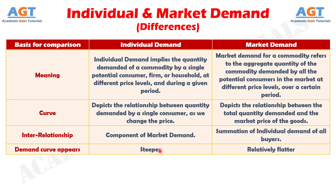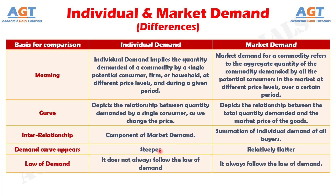And difference number 5: Individual demand does not always follow the law of demand, whereas market demand always follows the law of demand. As per the law of demand, when there is an increase in the price of the commodity, the quantity demanded will decrease.